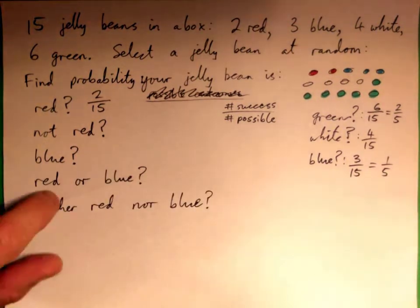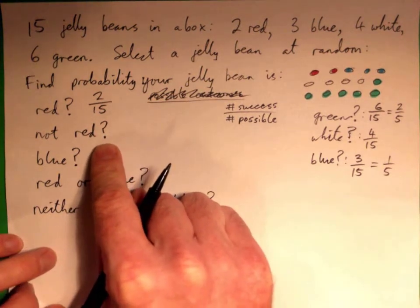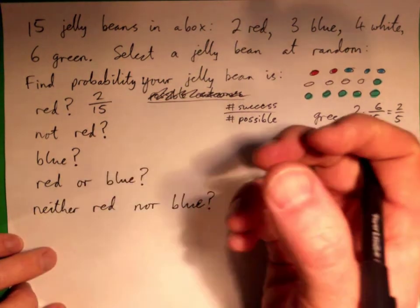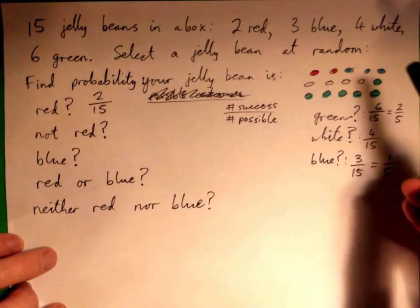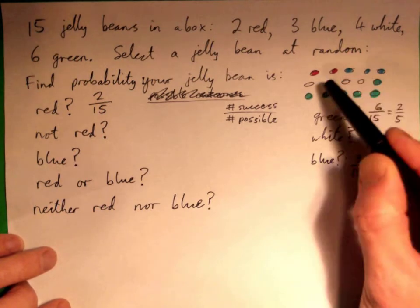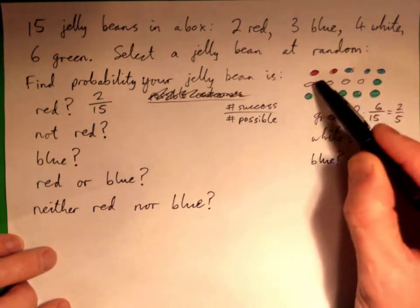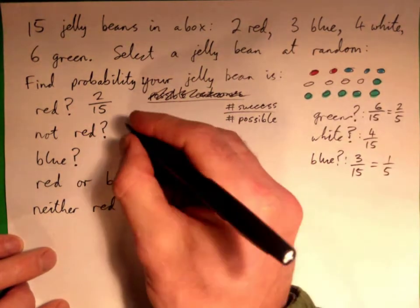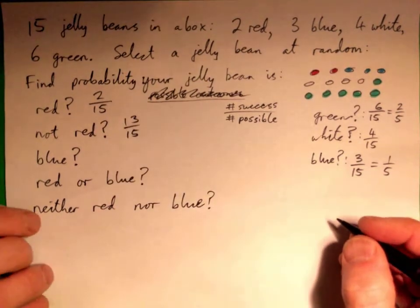So what's the probability that jelly bean is not red? If you select one jelly bean, it's not red. Good. Yeah. Everything apart from these two. So it could be one, two, three, four, five, six, seven, eight, nine, ten, eleven, twelve, thirteen. All the others, the blues, the whites, the greens, is thirteen of the others. So good, thirteen out of fifteen.